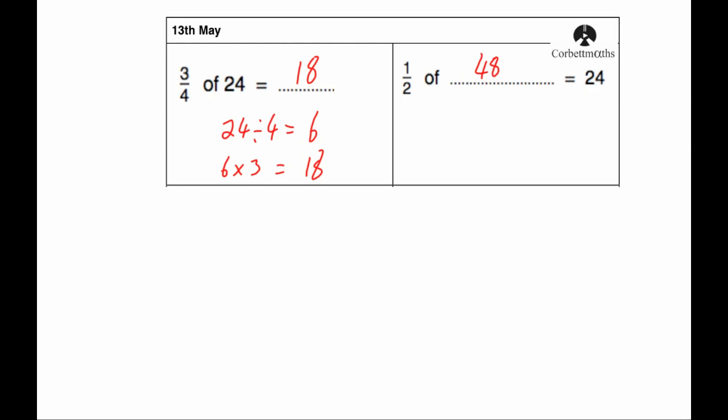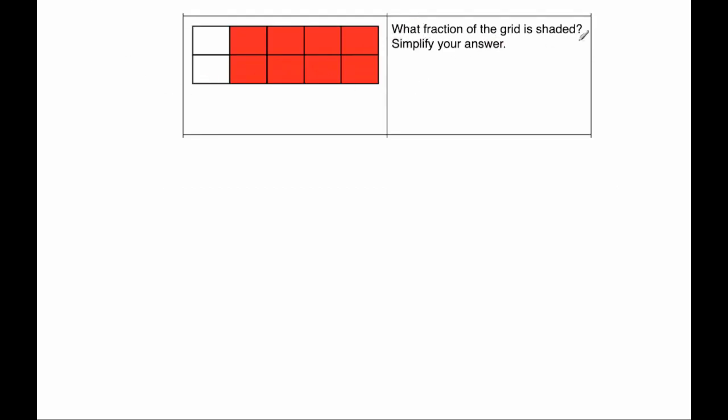Right, our next question says, what fraction of the grid is shaded? Simplify your answer. So we've got 1, 2, 3, 4, 5, we've got 10 squares there. And 8 of them are shaded, so it's going to be 8 tenths. But it says, simplify your answer. So simplifying it would be 4 fifths. So 4 fifths of this grid is shaded.